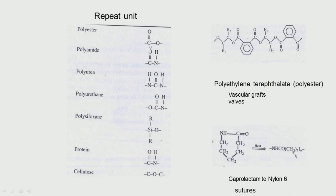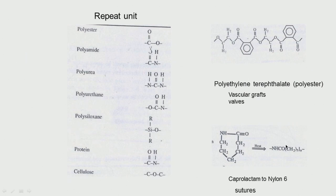Next, nylon 6 — where N can be a very large number. It starts with caprolactam converted to nylon 6, and is used in sutures. These sutures are not degradable; they are very strong. Nylon is used in applications requiring very high tensile strength. Those days it was used as sutures, but since it does not degrade, nowadays they have switched to other biodegradable materials.